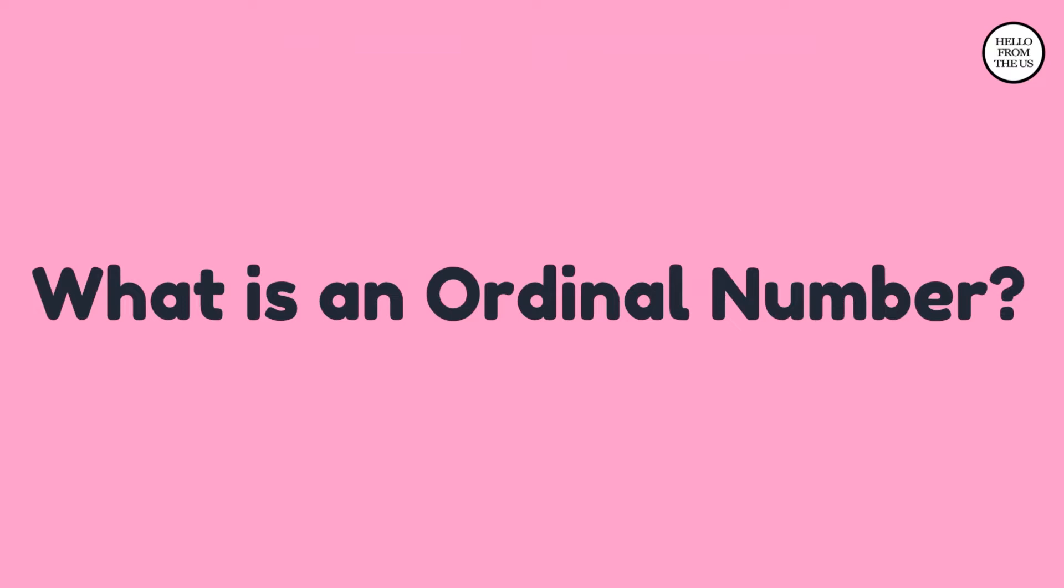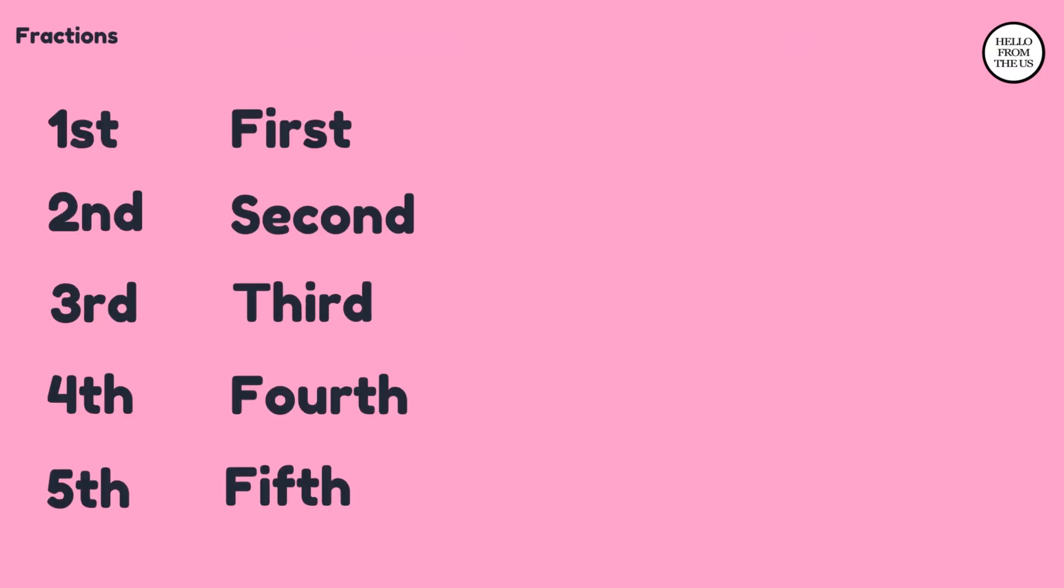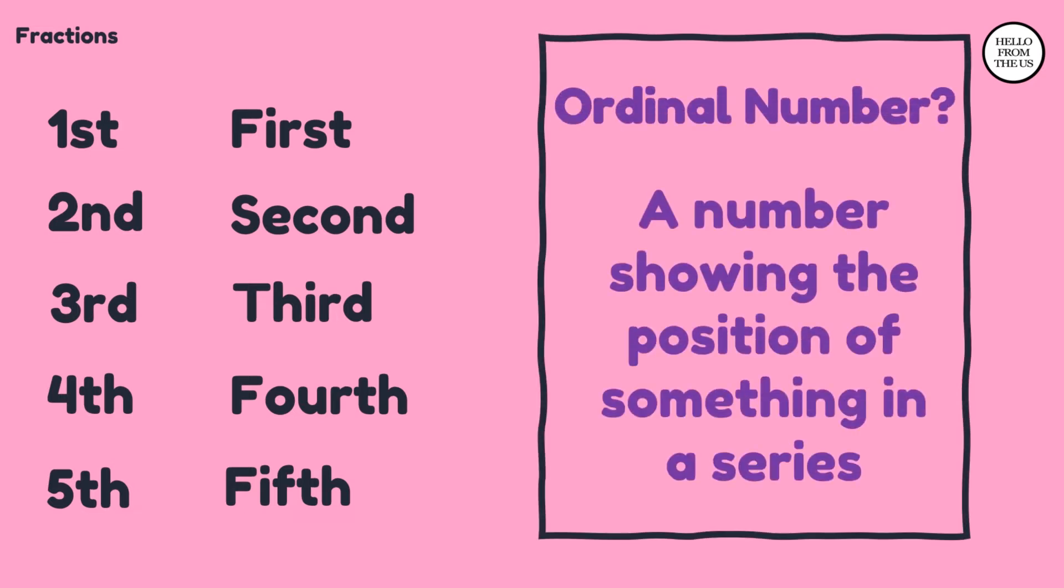What is an ordinal number? You can see some examples such as first, second, third, fourth, and fifth. These number names show the position of something in a series.